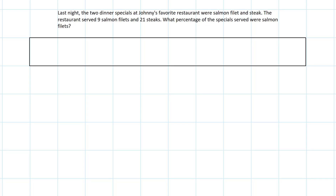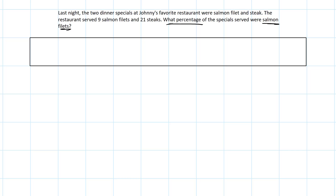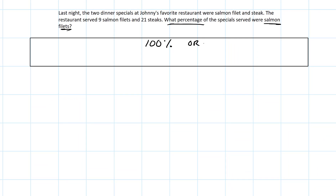Here's a second problem that's a little different. Last night, the two dinner specials at Johnny's favorite restaurant were salmon filet and steak. The restaurant served nine salmon filets and 21 steaks. What percentage of the specials served were salmon filets? The first thing I notice is they didn't give us the total. We need to add nine plus 21, giving us 30 total dishes.